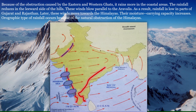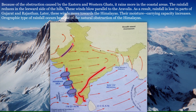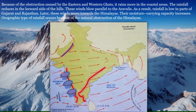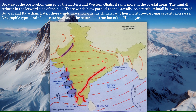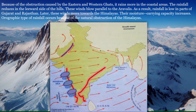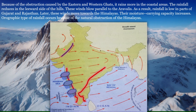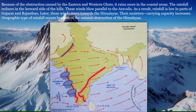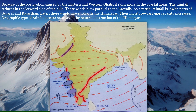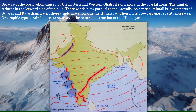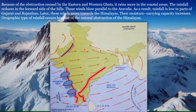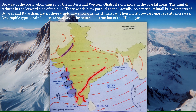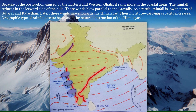These winds blow parallel to the Aravali ranges. As a result, rainfall is low in parts of Gujarat and Rajasthan. Later, these winds move towards the Himalayas, their moisture-carrying capacity increases, and thus orographic rainfall occurs in that region because the Himalayas act as an obstruction.